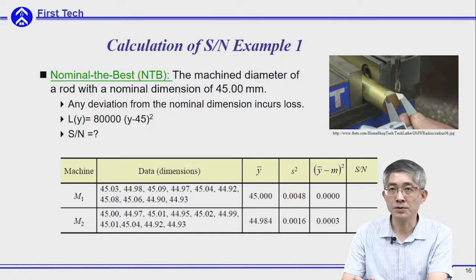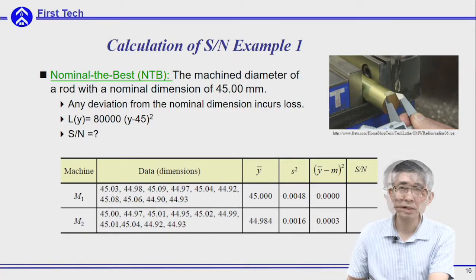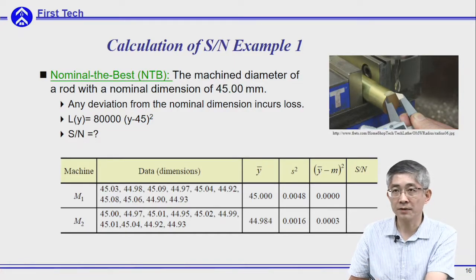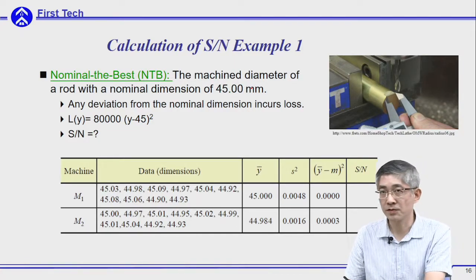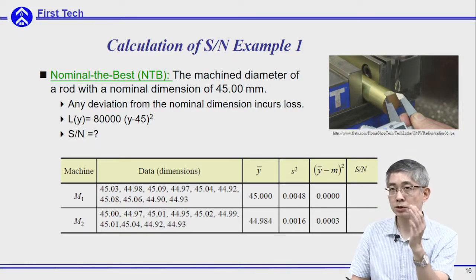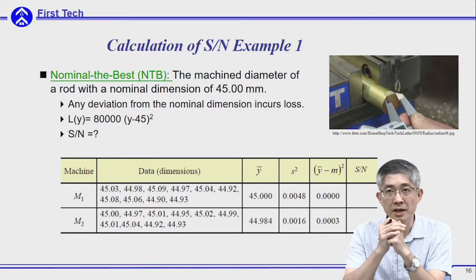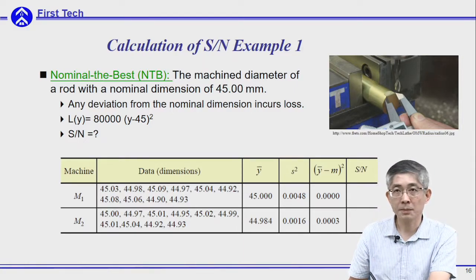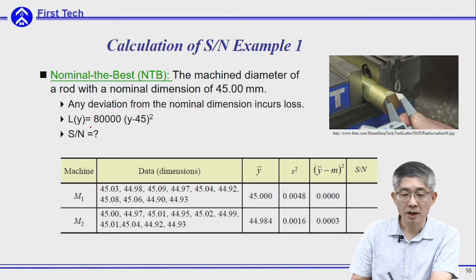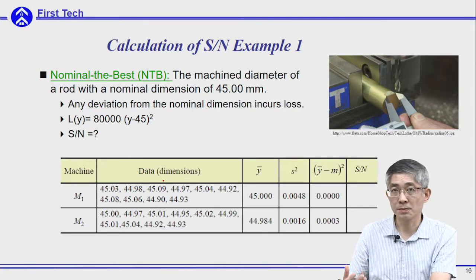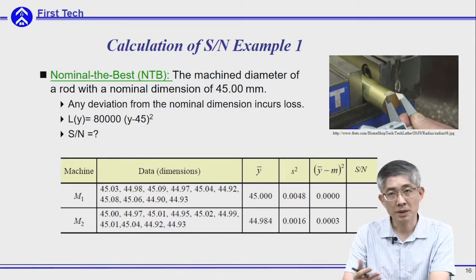These are some examples. The first is a nominal-the-best case: machining a shaft where the diameter should be at a nominal dimension such as 45 millimeters. Anything bigger or smaller is not a good design. This is the average loss data, and you can use it to calculate the corresponding SN ratio to determine which machine is better — the result should match what was found using average quality loss in the last session.